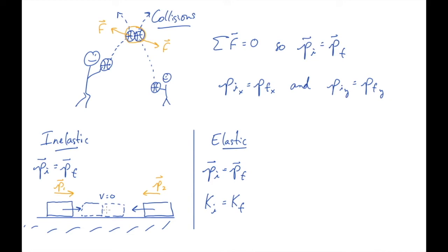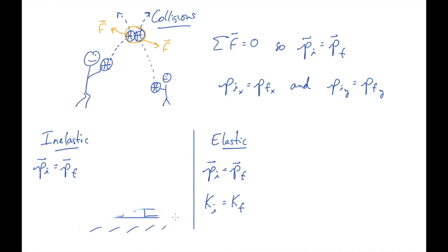You look at the momentum before the collision, account for it all — mass times velocities — and set it equal to all the momentums after the collision, mass times velocities. We'll do this in a number of examples to get some practice. Before we move into examples, let me define one more term: when you're dealing with inelastic collisions, there's a term called perfectly inelastic.